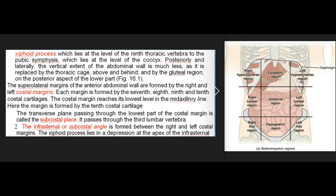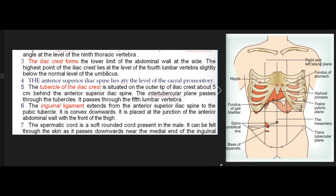The infrasternal or subcostal angle is formed between the right and left costal margins. The xiphoid process lies in a depression at the apex of the infrasternal angle at the level of the 9th thoracic vertebra. The iliac crest forms the lower limit of the abdominal wall at the side. The highest point of the iliac crest lies at the level of the 4th lumbar vertebra, slightly below the normal level of the umbilicus. The anterior superior iliac spine lies at the level of the sacral promontory. The tubercle of the iliac crest is situated on the outer lip of iliac crest about 5 cm behind the anterior superior iliac spine. The intertubercular plane passes through the tubercles and through the 5th lumbar vertebra.